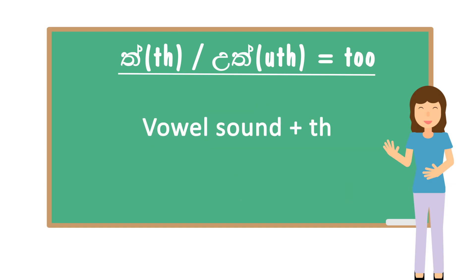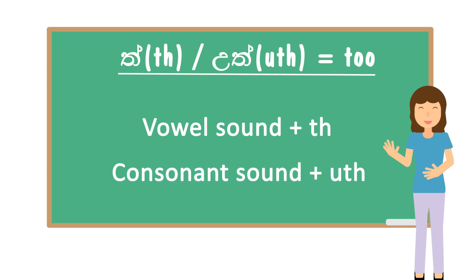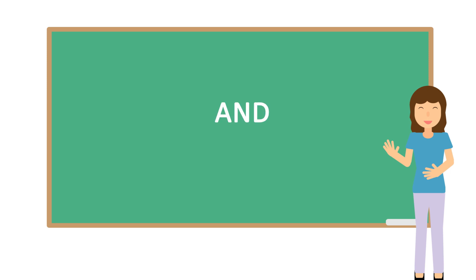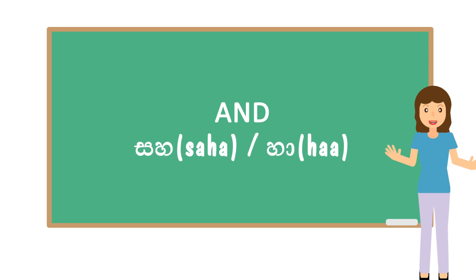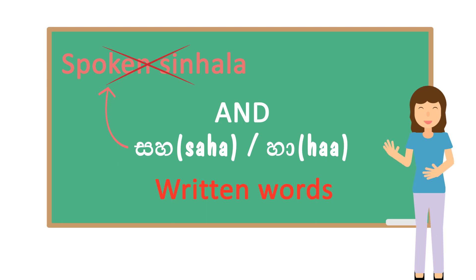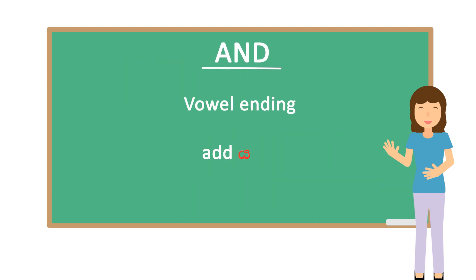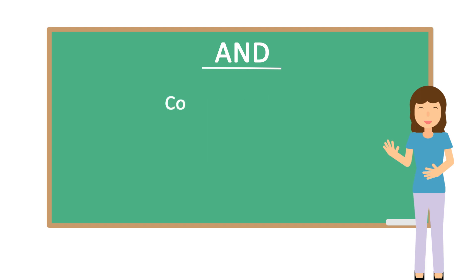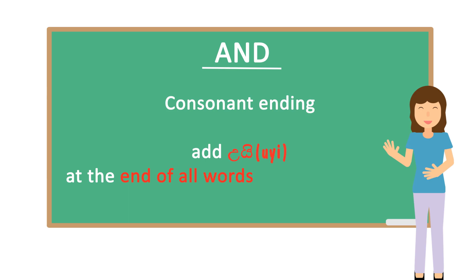So if the word ends with a vowel sound, add UTH. And if the word ends with a consonant, add UTH. Next word is the translation for AND. You might see the translation for AND as SAHHA or HA, but they are a bit more written-type words than casual spoken words. I'll tell you about these types of words in a future video, so don't use them in normal conversations. The casual spoken way of saying AND works like this: if the word ends with a vowel, simply add the sound I at the end of each noun that connects with AND. If the word ends with a consonant, add the sound UI.